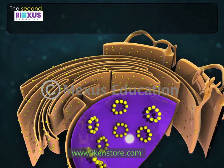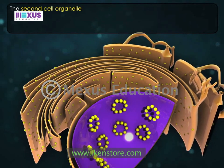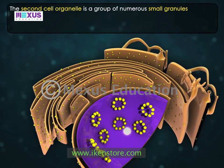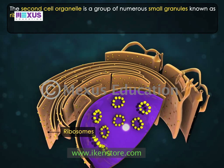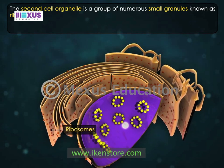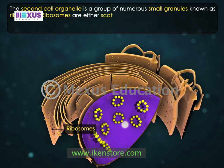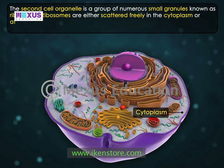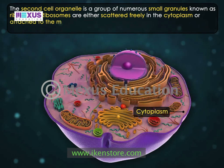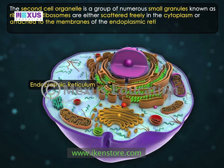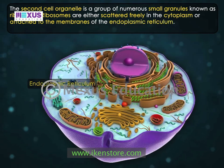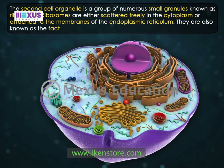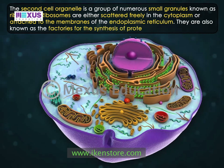The second cell organelle is a group of numerous small granules known as ribosomes. Ribosomes are either scattered freely in the cytoplasm or attached to the membranes of the endoplasmic reticulum. They are also known as the factories for the synthesis of proteins.